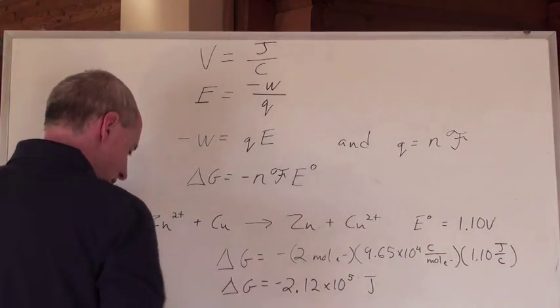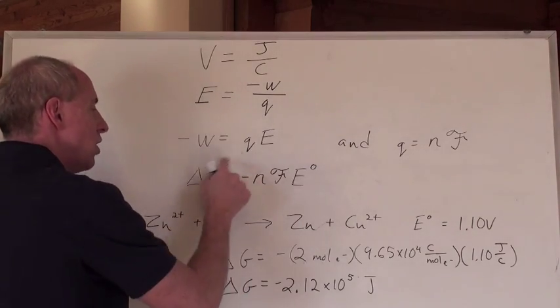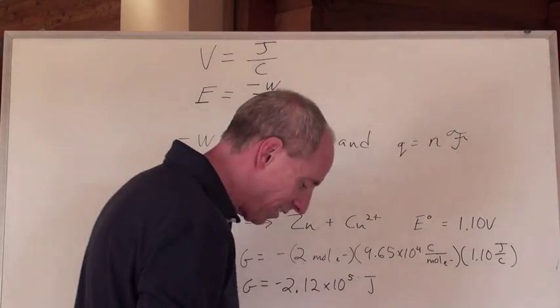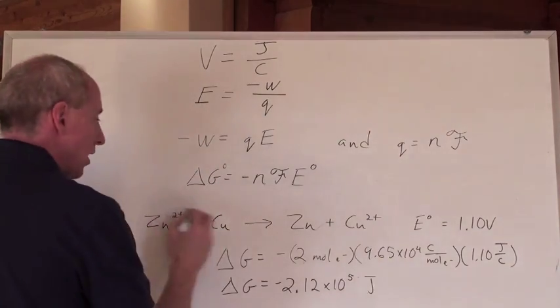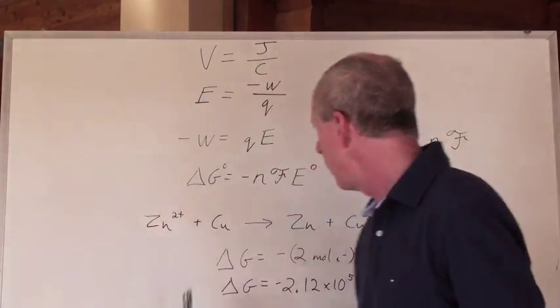Right, of course. So, here's the deal. If we have an E naught value, that gives us a G, a delta G naught value as well. So, if I say to you, hey, here's a zinc copper cell, and here's the reaction for it.